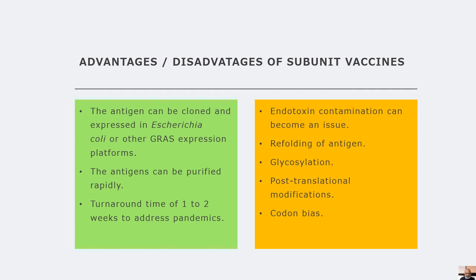There are advantages and disadvantages of subunit vaccines. The first advantage is the speed of production — antigens can be cloned and expressed rapidly, purified, and used in the event of a pandemic as the turnaround time is short. However, there are issues associated with these vaccines, including endotoxin contamination or contamination from accessory proteins of the host or platform, refolding issues with antigens which cannot be refolded in prokaryotic hosts, and glycosylation, post-translational modifications, and codon bias in the bacterial host.